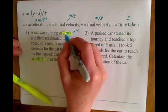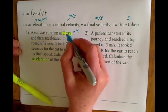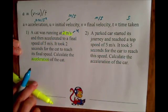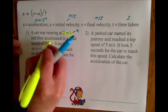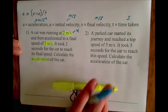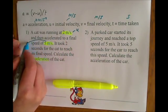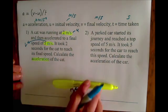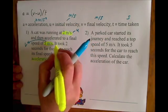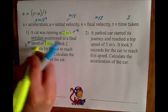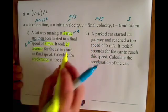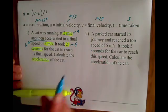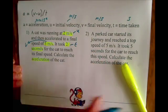So the cat was running at 2 meters per second — next to that I'd write u, that's the velocity he was starting at. Then he accelerated to a final speed of 5 meters per second — next to that I'd write v for final velocity. And it took 2 seconds, so I'd make a note that that was t. All you then need to do is put the numbers in.